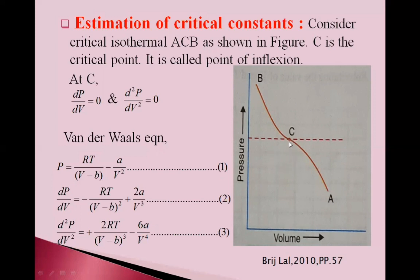At C, dP by dV is 0. Change in pressure with change in volume is 0. Also, d²P upon dV square is 0 at this C point.